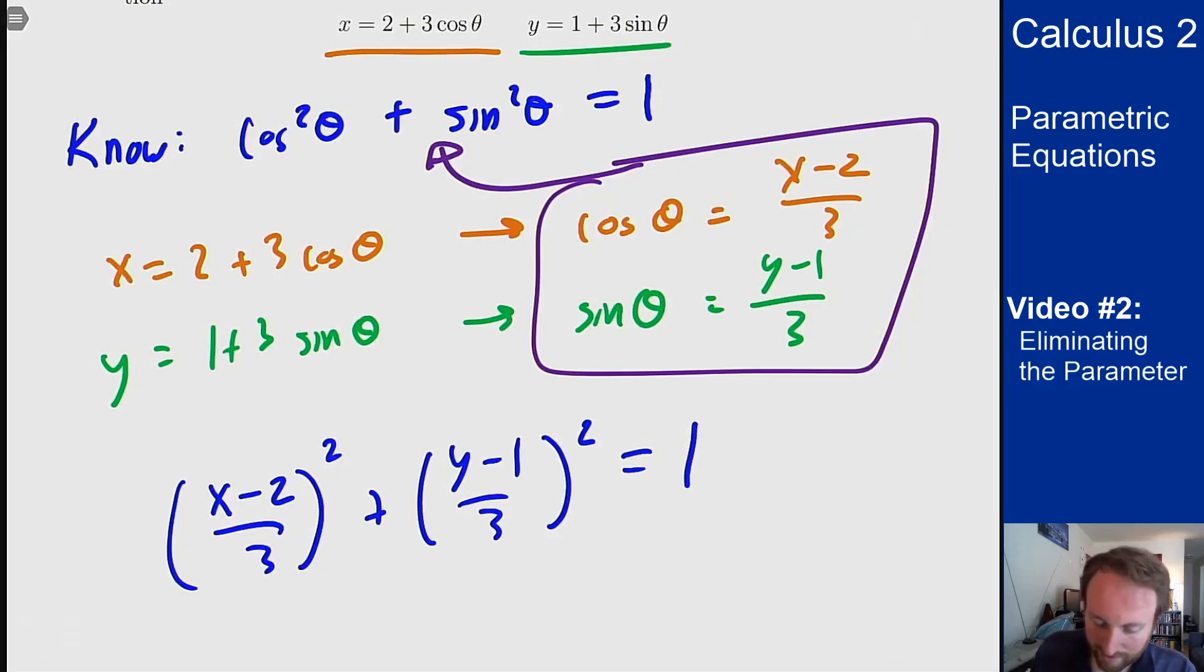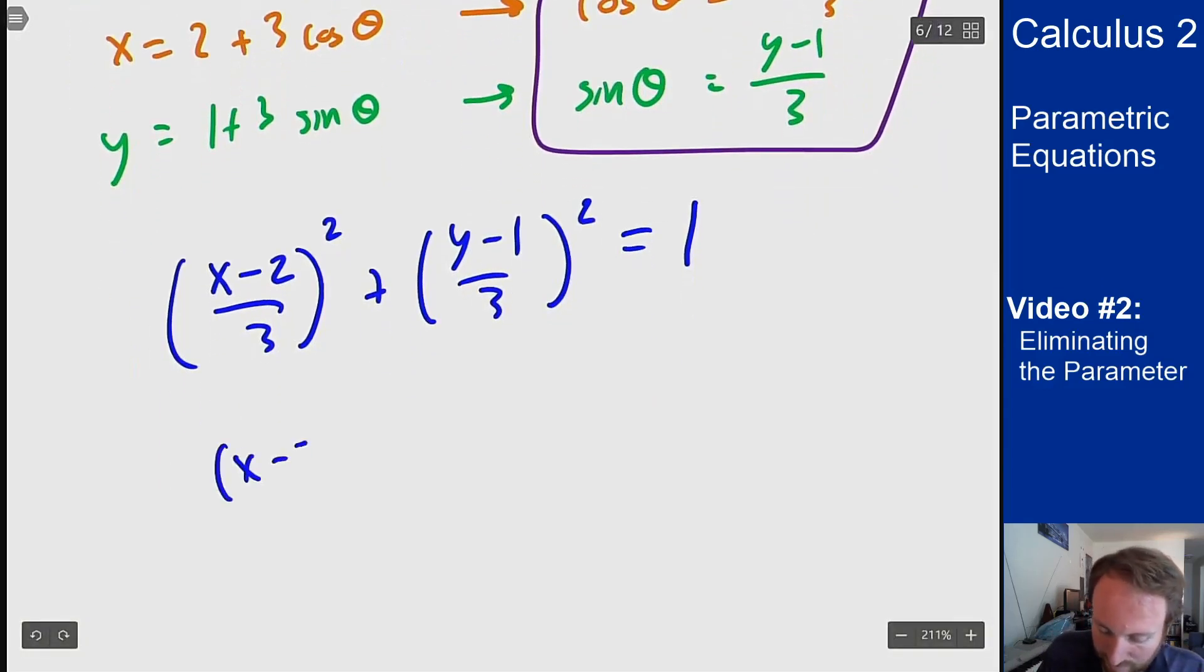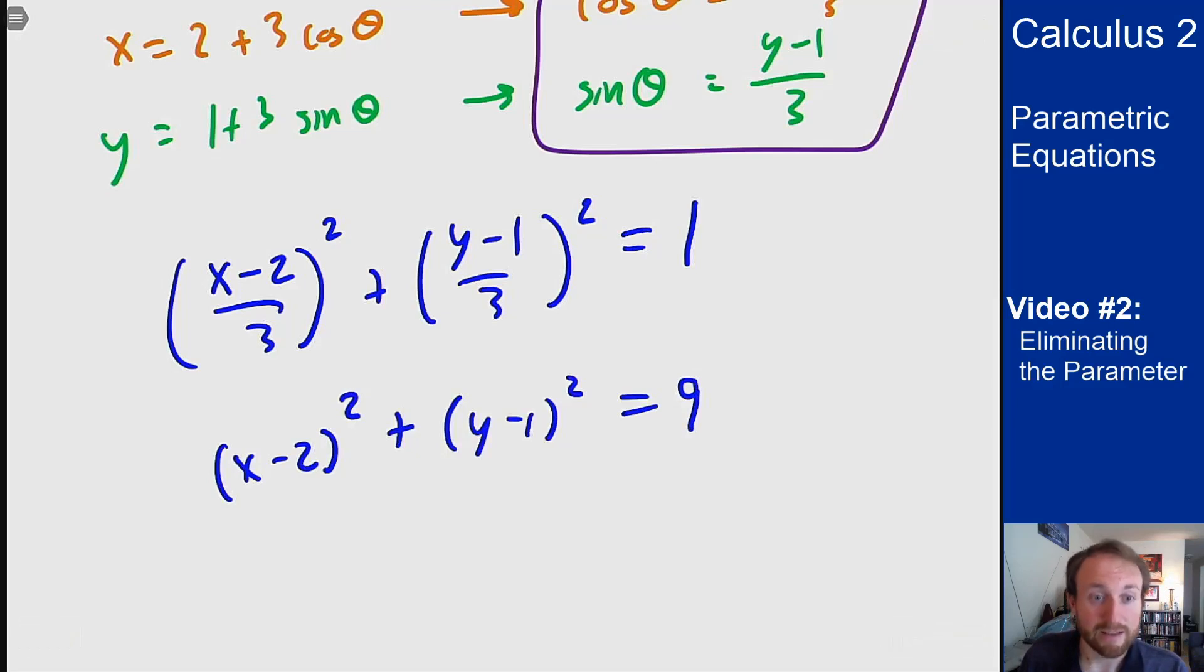Or multiplying both sides by 9, x minus 2 squared plus y minus 1 squared equals 9. And what kind of a function is this? What kind of a graph is this? This is a circle with radius 3 and center at 2, 1.